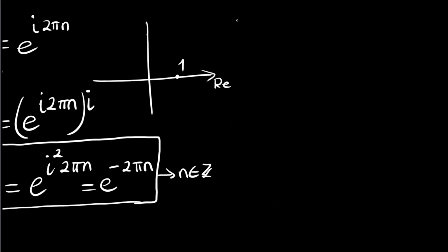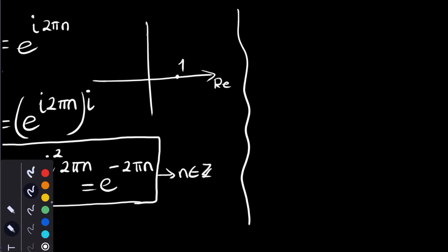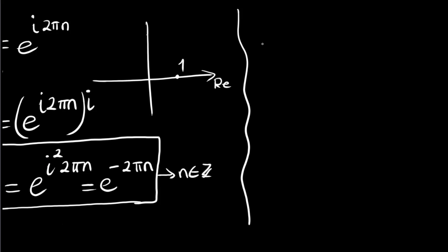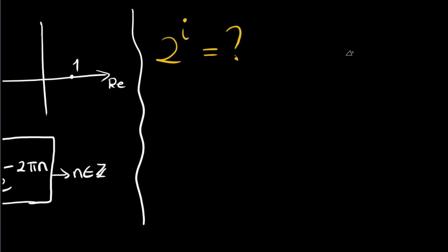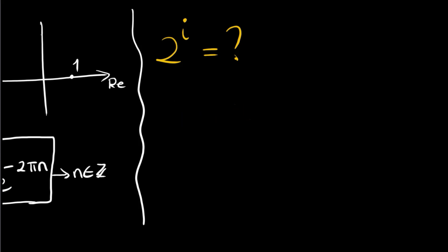Now let's look at the second question: two to the power i. This two can be shown using Euler's formula — we write two as e to the power ln two.